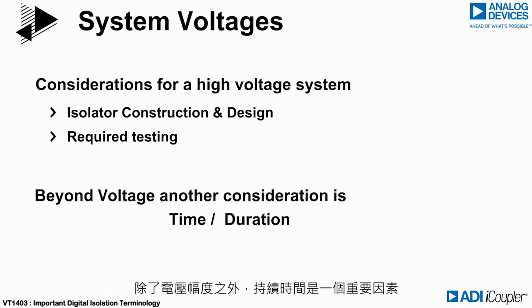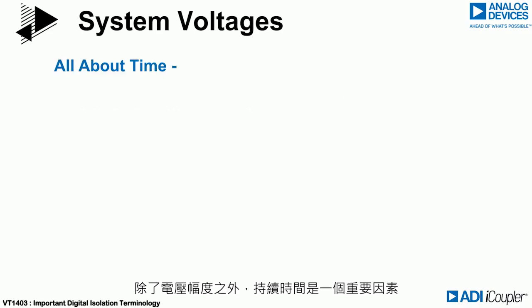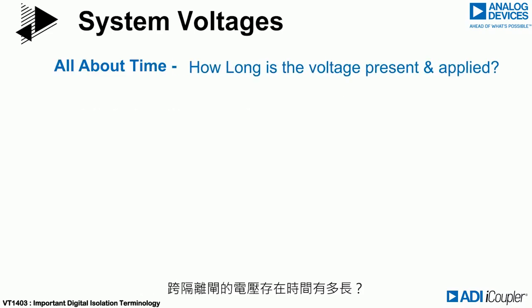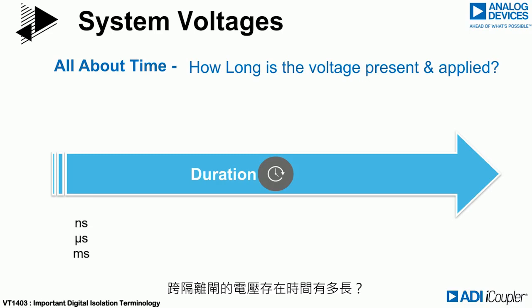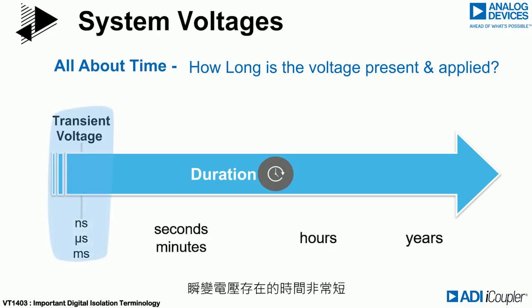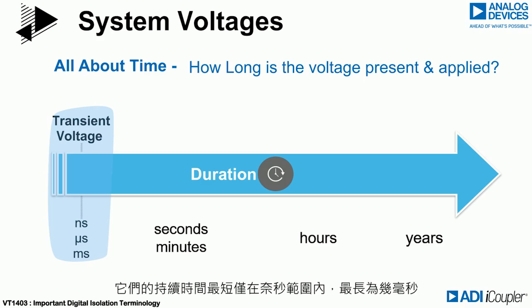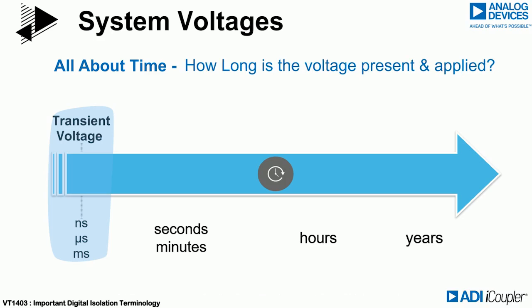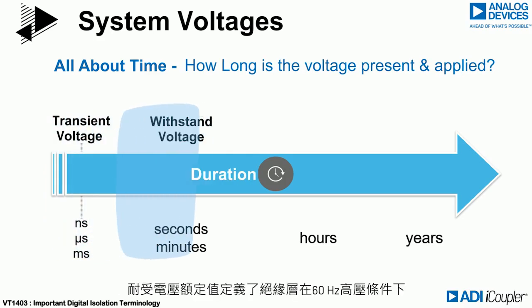Beyond the magnitude of the voltage, a key concern is the duration — how long does the voltage exist across the insulation barrier? Transient voltages exist for very short periods of time. They can be very brief in the nanosecond range or up to milliseconds in duration.